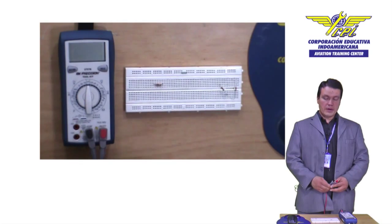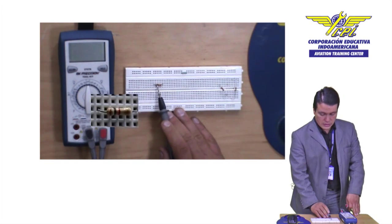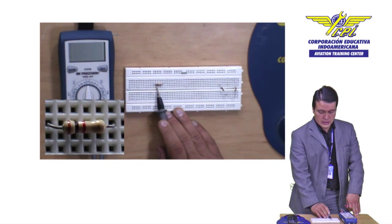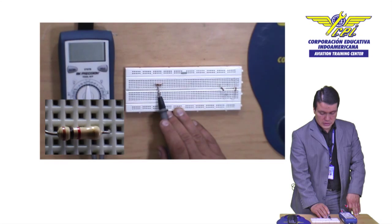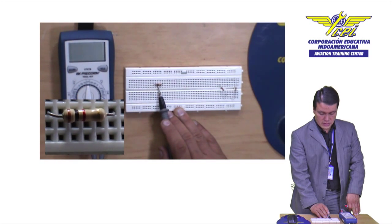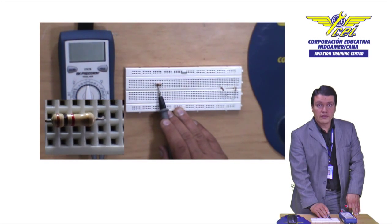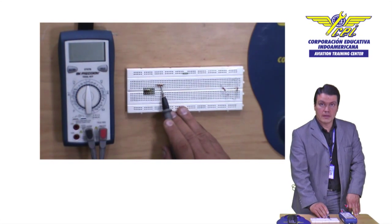De forma práctica observemos que tengo una resistencia aquí donde su primera franja tiene el color marrón, en su segunda franja tenemos el color negro, su tercera franja tiene el color rojo y finalmente su última franja es el color dorado.